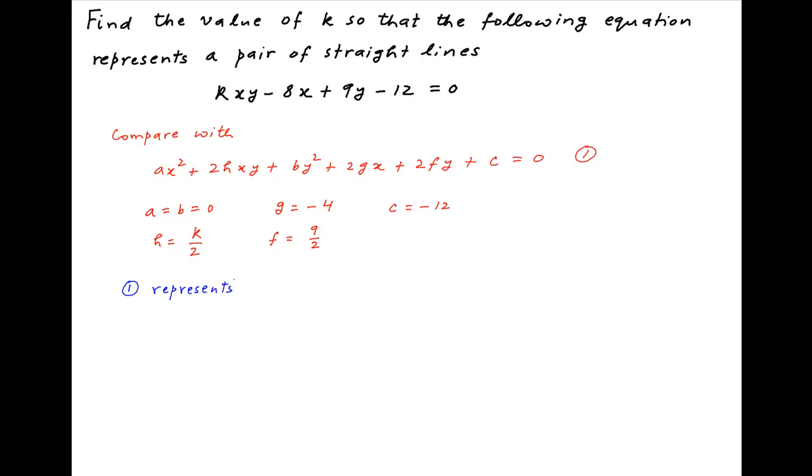Now we know that equation 1 represents a pair of straight lines if the determinant with rows a h g, h b f, and g f c is equal to 0.